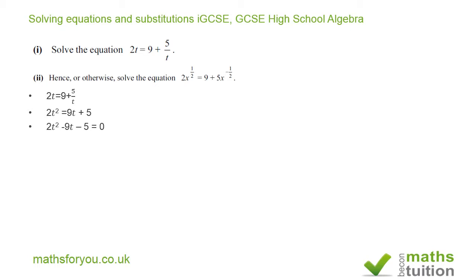Instead of writing minus 9t, I can write 2t squared plus t minus 10t minus 5, because t minus 10t is the same as minus 9t, so I've made no difference at all. Now I can factorize in groups — factorize 2t squared plus t first, and then factorize 10t minus 5.